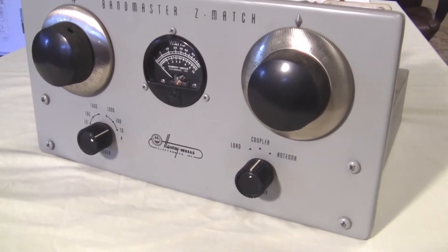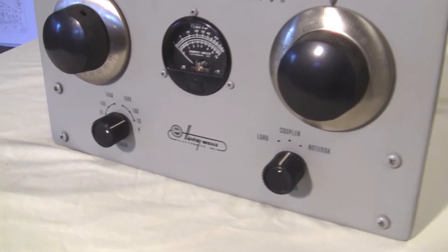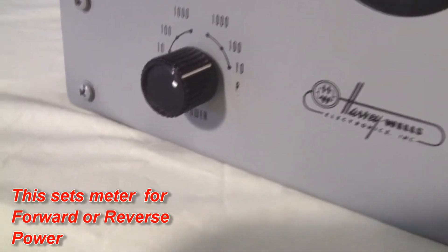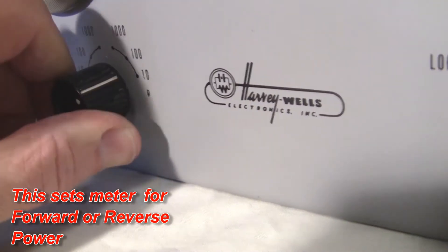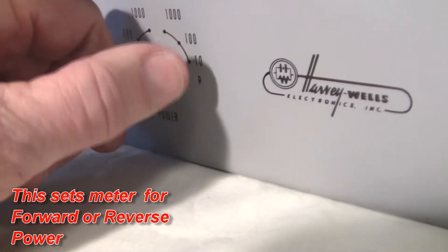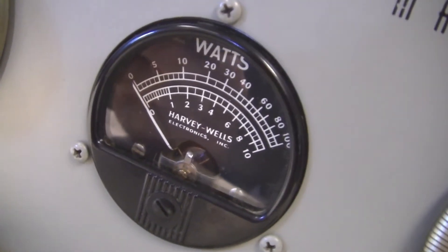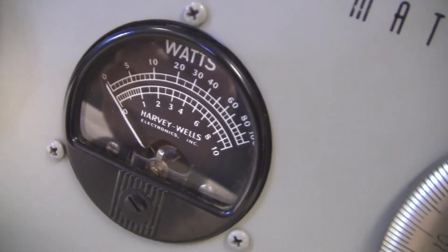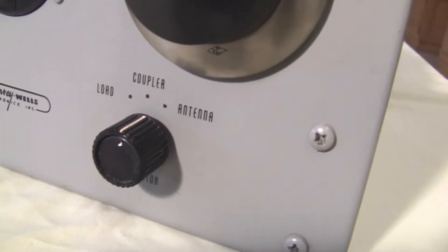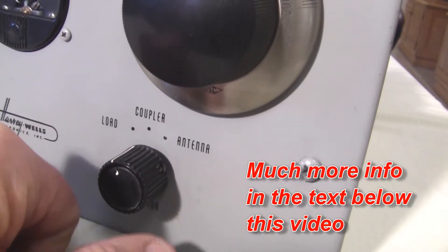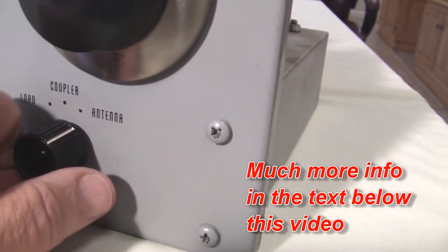1950s Harvey Wells Bandmaster Z-Match. Let's take a look at some of the controls on this. Down here we have a switch for setting up the different power levels that you would read up here on the SWR meter or watt meter. And over here, pretty simple. You can hook it up to the dummy load, to the coupler, or directly to the antenna.